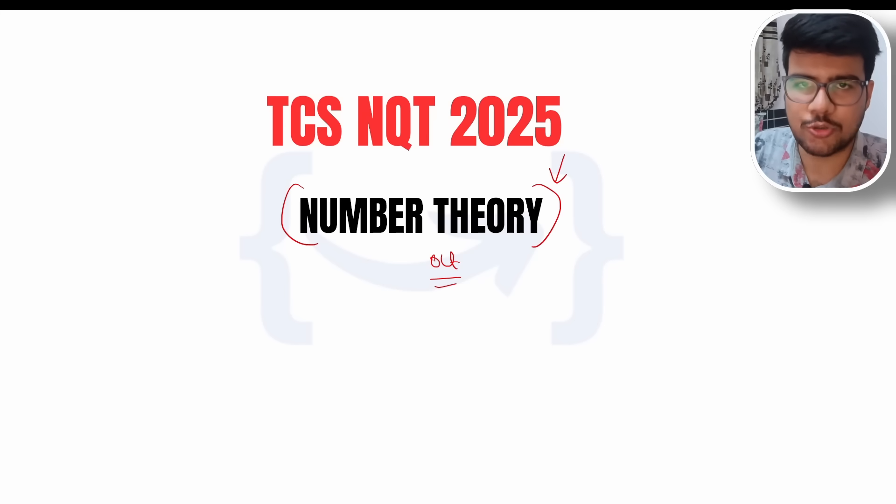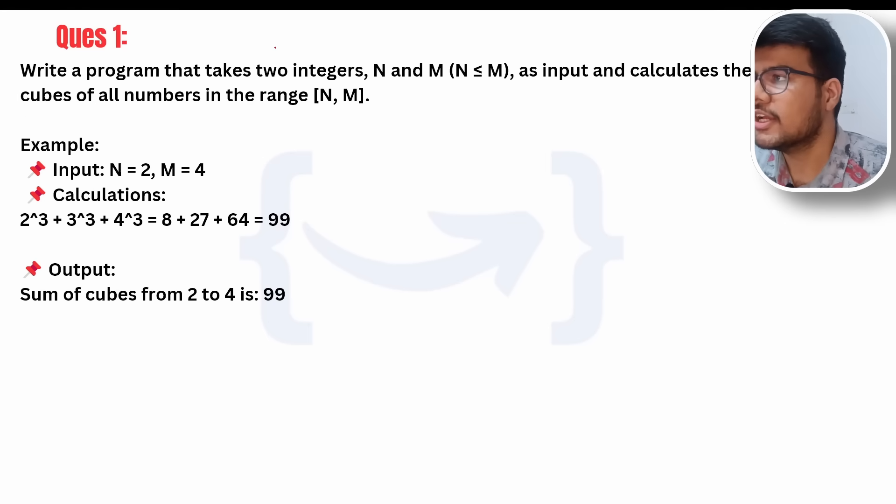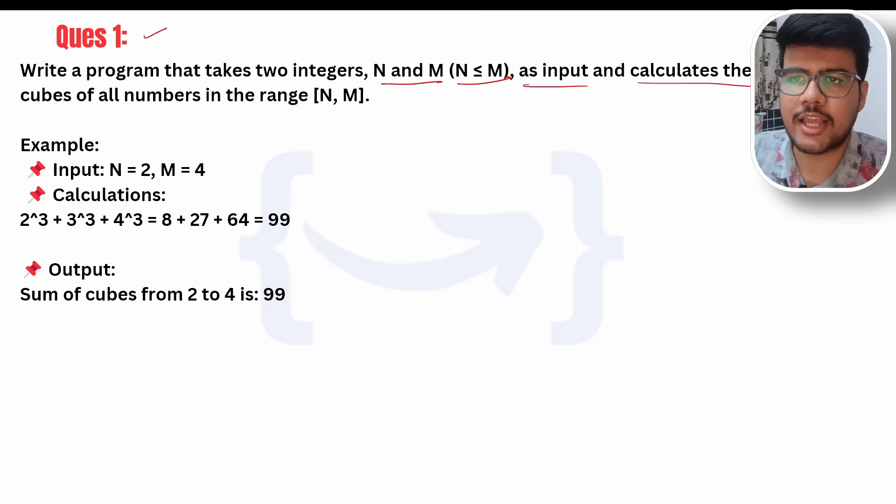Question number one, you can see: write a program to take two numbers N and M when N is less than M as input and calculate the sum of cubes of all numbers in the range. Now I just want to tell you the rules.